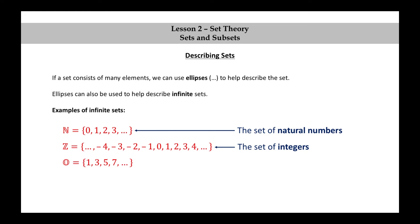O equals 1, 3, 5, 7, and so on. This is the set of odd natural numbers.